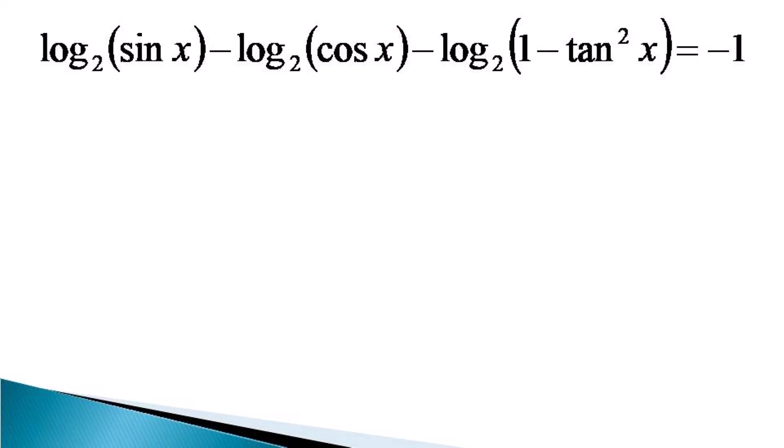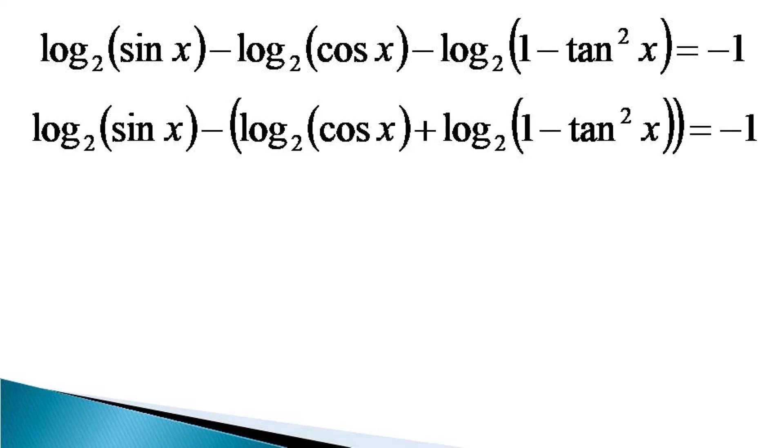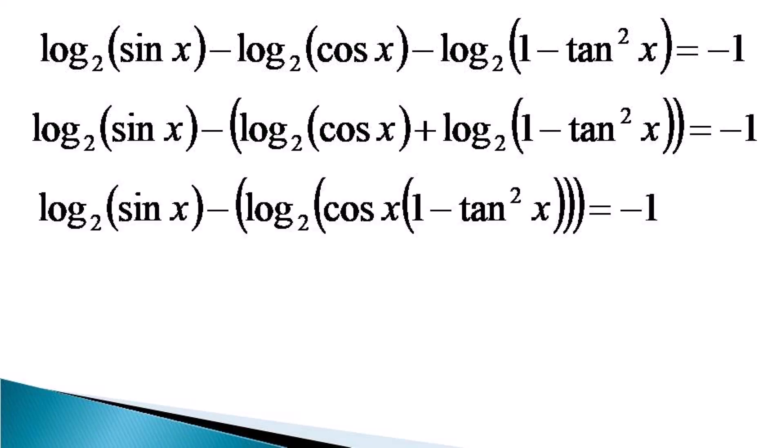To solve this equation, first we consider the last two terms on the left hand side and use the multiplication property of the log, and it converts to minus log of cos x into 1 minus tan²x.